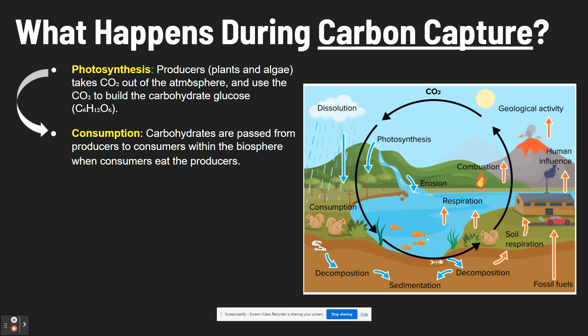Next is consumption. This is where the carbohydrates that the producers made get passed from those producers to consumers. Both the producers and consumers at this point make up the biosphere — they are living things.